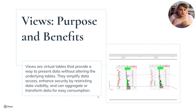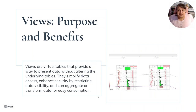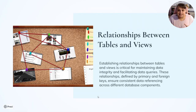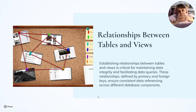The purpose of views and benefits: views are virtual tables that provide a way to present data without altering the underlying tables. They simplify data access and enhance security by restricting data visibility, and can aggregate and transform data for easy consumption. The view is what the user sees; the normalized tables are the logical structure. The relationships between tables and views are critical for maintaining data integrity and facilitating queries — these relationships are defined by primary and foreign keys, which ensure consistent data referencing. When you put a foreign key from another table in, it makes the tables related.